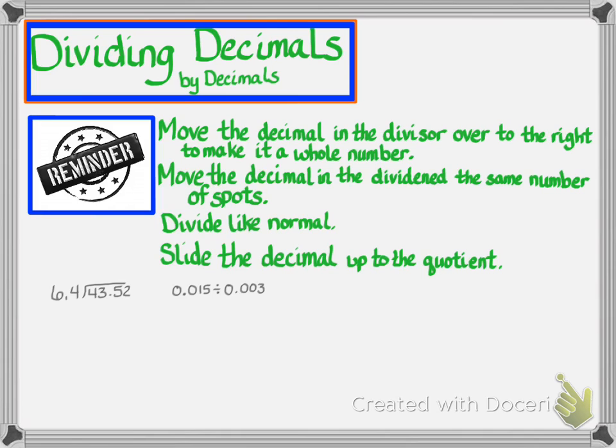You have to move the decimal in the dividend the same number of spots. Now you're going to divide like normal and don't forget at the end to slide your decimal point up to the quotient.